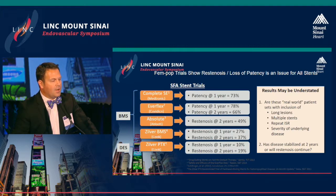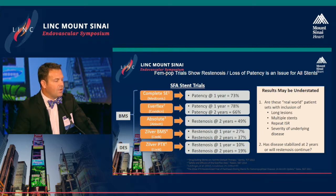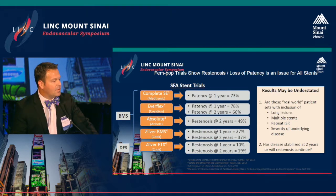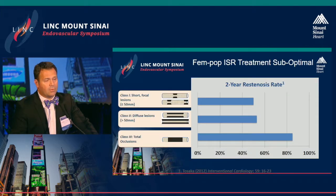Even having looked at these trials, you have to wonder if the results are understated, because when you look closely, these trials aren't including what we see every day: long lesions, overlap stents, repeat offending ISR. People have multi-level disease that makes it complicated, and of course the disease is also progressive. If you look at really complex ISR by classification, you see that the restenosis rates are really unacceptably high. It's a difficult problem that we face.